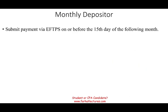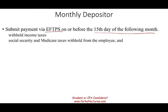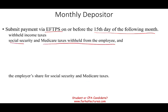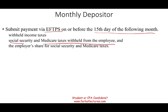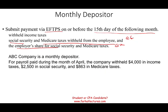Monthly depositors submit their payment through EFTPS — or you could still submit a check — on or before the 15th day of the following month. What do you submit to the government? Simply three things: the Social Security and Medicare tax withheld from the employee, then the employer's share as well, plus federal income tax withheld. You submit those three things.